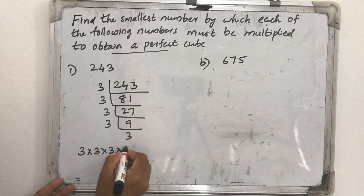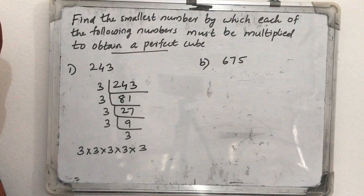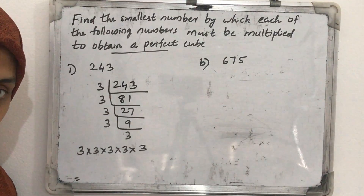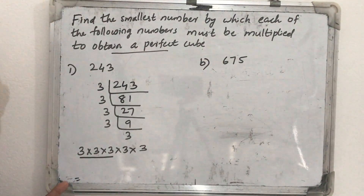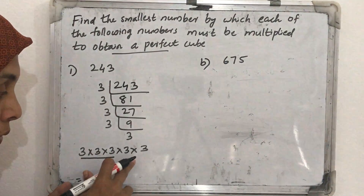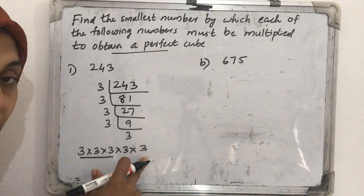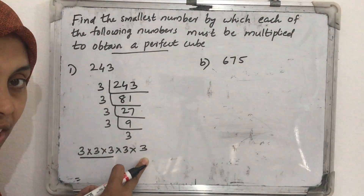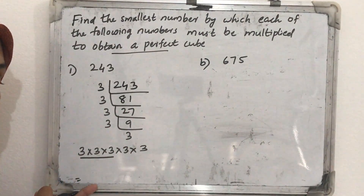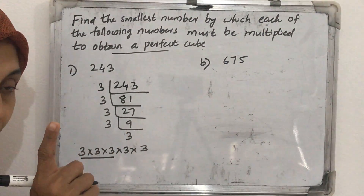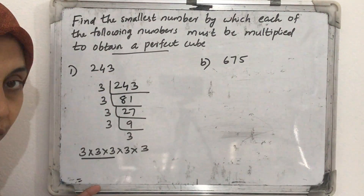We get 3 × 3 × 3 × 3 × 3 — that's five 3s. If it is a perfect cube, we know that its prime factors will occur in triplets. Here we got one triplet of 3, but the other two 3s are not in a triplet. One more 3 is needed to make it a triplet. So which number should we multiply? We multiply by one more 3.